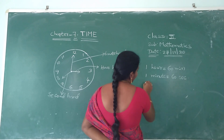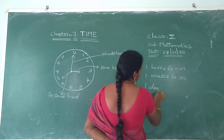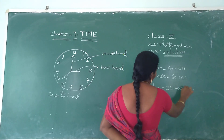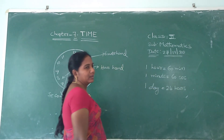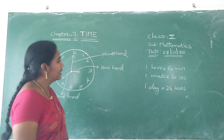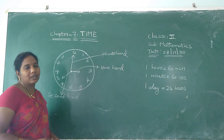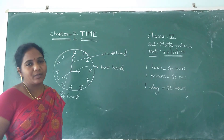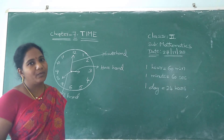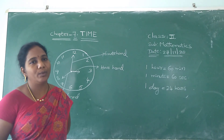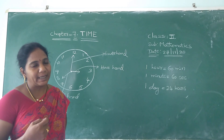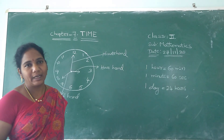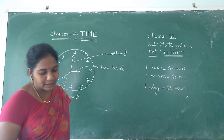So one day is equal to how many hours? Yesterday I said — how many hours? 24 hours. Yesterday I also made some problems: when you will wake up, when you will take breakfast, when you will go to school, when you will return home, when you will take lunch, when you will take dinner, when you will play — at what time. Yesterday I said everything.